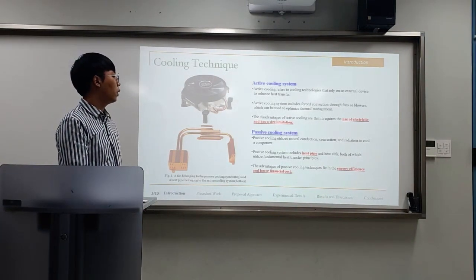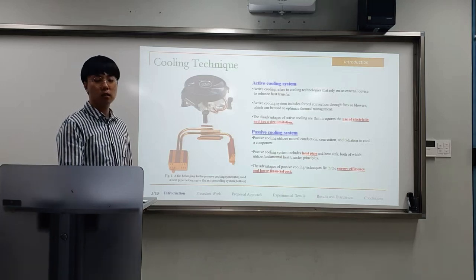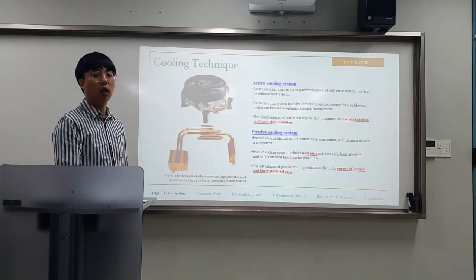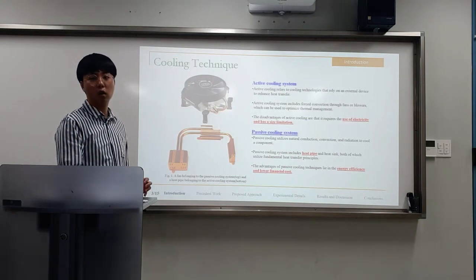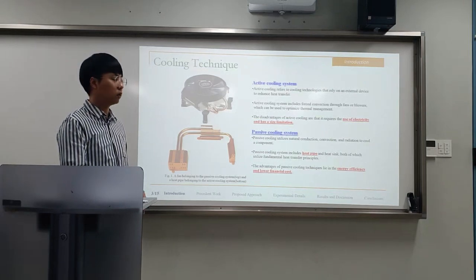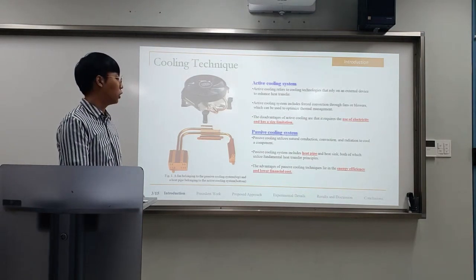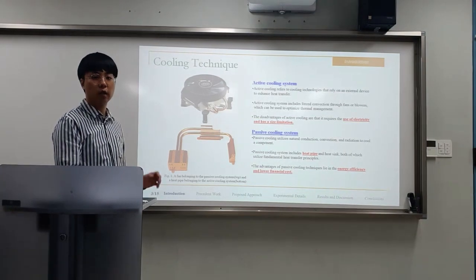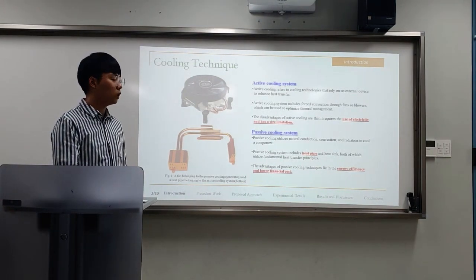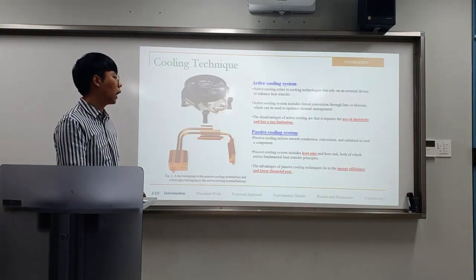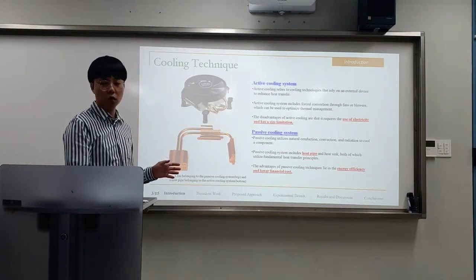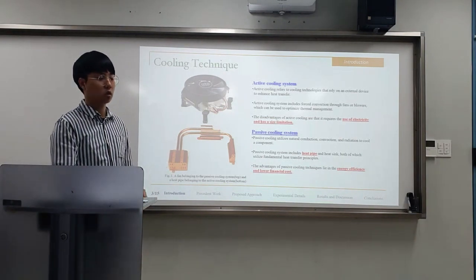Passive cooling systems utilize natural conduction, convection, and radiation to cool components. Passive cooling systems include heat pipes and heat sinks, both of which utilize fundamental heat transfer principles. The advantages of passive cooling techniques lie in energy efficiency and lower financial cost.